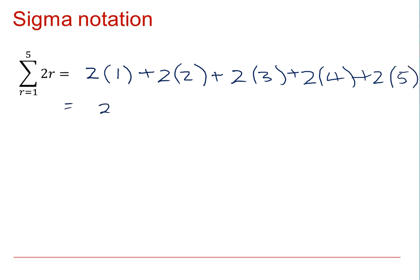That will give us 2 plus 4 plus 6 plus 8 plus 10, which when we add them together or sum them, gives us 30.